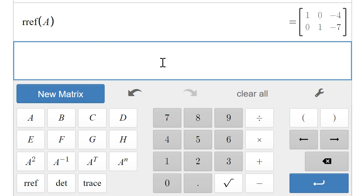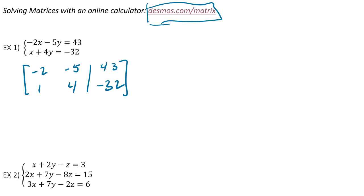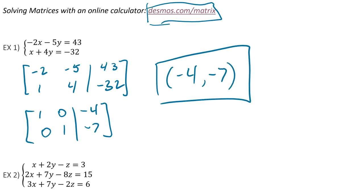So it already gave us our answer. So we're going to go back to the paper. And what it gave us was 1, 0, negative 4, 0, 1, negative 7. So if you remember, that's just our answer already. So x is negative 4, y is negative 7. Solved it for us, we are done.